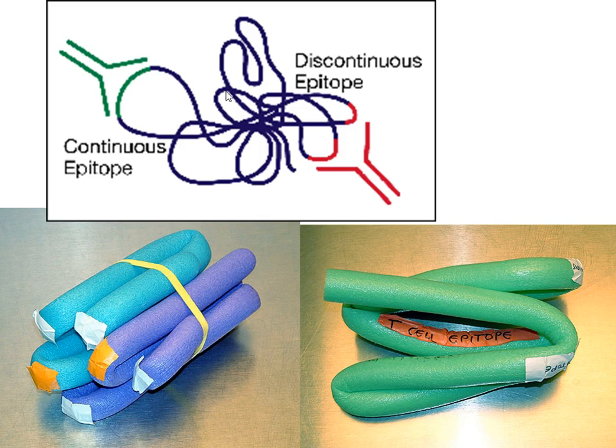Conformational epitopes are recognized by B cells. The amino acids participating in conformational epitopes are actually in different positions; with three-dimensional folding of the protein, the amino acids come together to form an epitope. If you stretch the peptide chain, the epitope is going to be destroyed. In the case of T cell epitopes, the amino acids are in sequence — so T cell epitopes are always linear epitopes, whereas B cell epitopes are conformational epitopes.